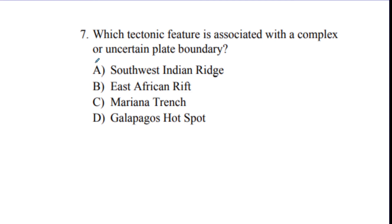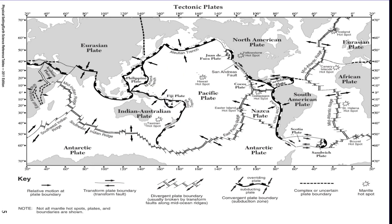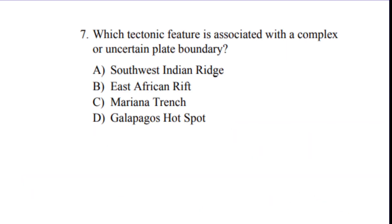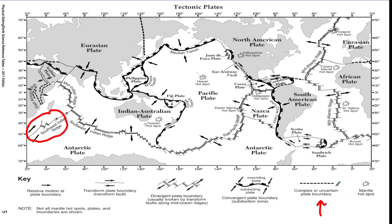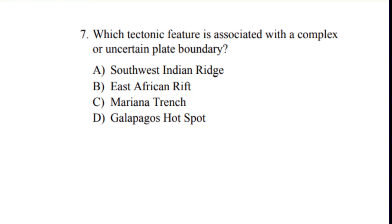Number seven, which tectonic feature is associated with a complex or uncertain plate boundary? You would go to page five, and you would look at these four spots. We would find Southwest Indian Ridge, which is right here. So that does not look like complex. We want the dotted line. Then we would go to the next one. East African Rift. We would find East African Rift, which is over here. And that looks like dotted lines, so that's probably the answer. But then you would just check the other two. Mariana Trench. That's right here. That's convergent. See the little squares? And then the last one was the Galapagos Hotspot. A hotspot is a hotspot. But the line there shows that that would be divergent. So your best answer here is going to be the East African Rift. B.